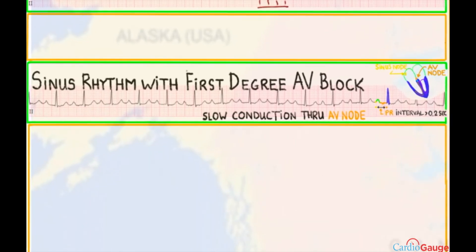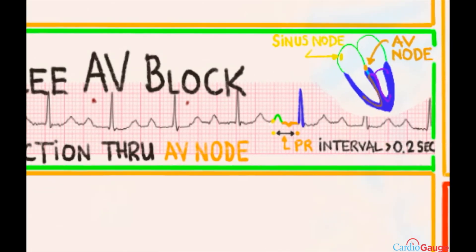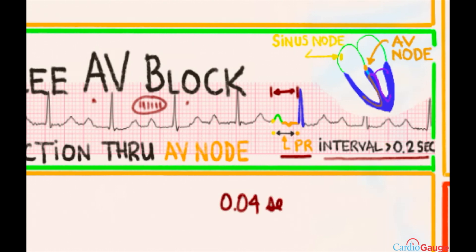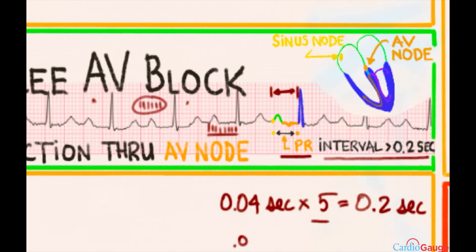Let's talk about sinus rhythm with first degree AV block. First degree AV block is when conduction is slowed through the AV node and the PR interval is longer than normal. The PR interval goes from the very start of the P wave to the very start of the QRS. If this interval is more than 0.2 seconds — equal to five little boxes, since each little box is 0.04 seconds — that's first degree AV block. In this case, counting approximately seven little boxes: 0.04 times seven equals 0.28 seconds, confirming first degree AV block.